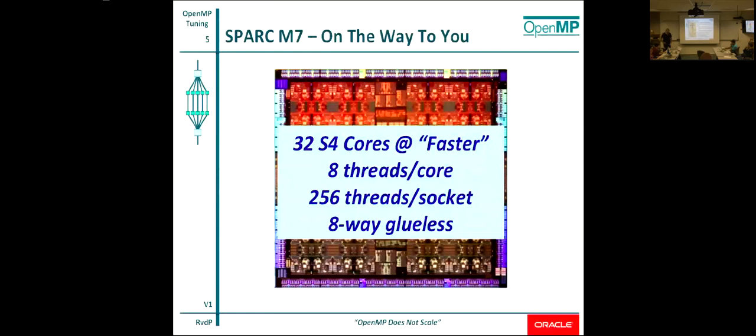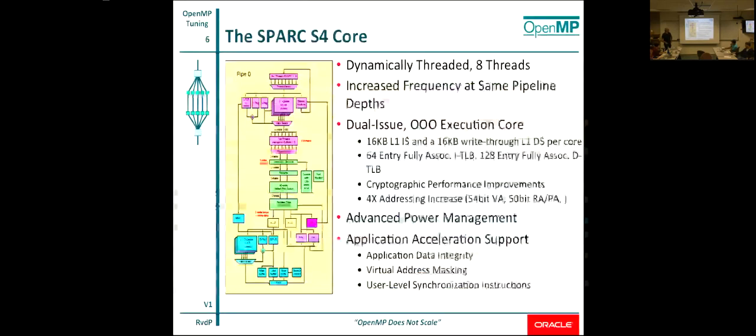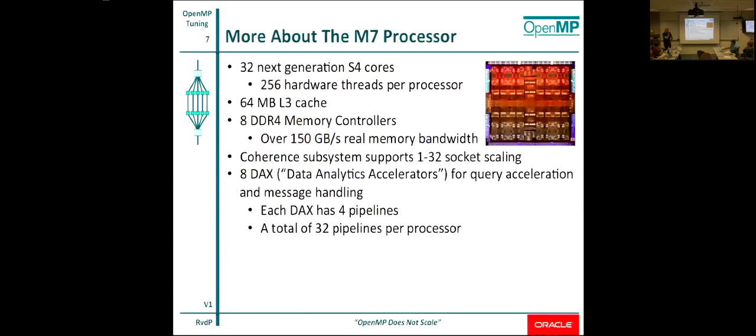This system can go eight-way glueless. You can go bigger, as we did with the M6, but then you add an extra layer of network. The new core is pretty modern, actually: out of order, two-way superscalar, a respectable speed. Eight threads. 64 megabytes L3 cache, eight controllers. The strength of this chip is actually in the bandwidth. You've got an awful lot of bandwidth. The measured bandwidth is about 150 gigabytes a second memory bandwidth.